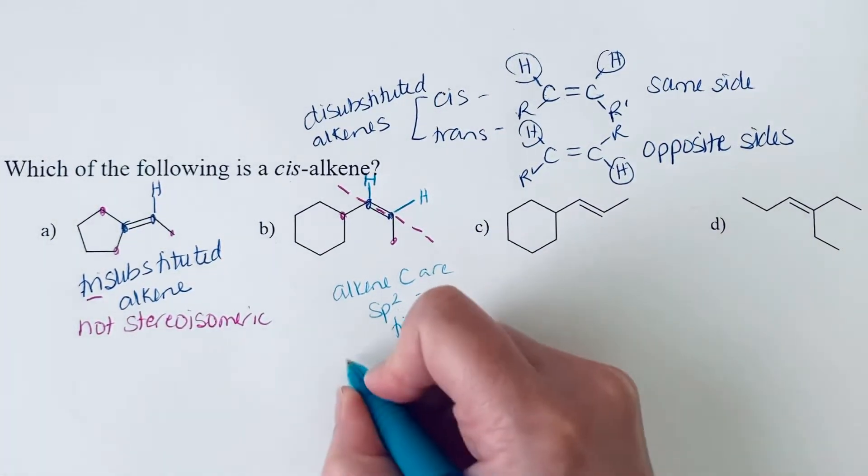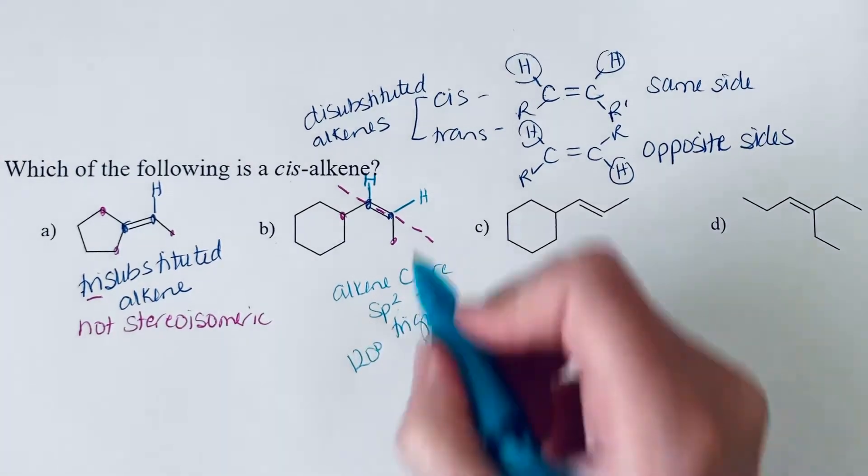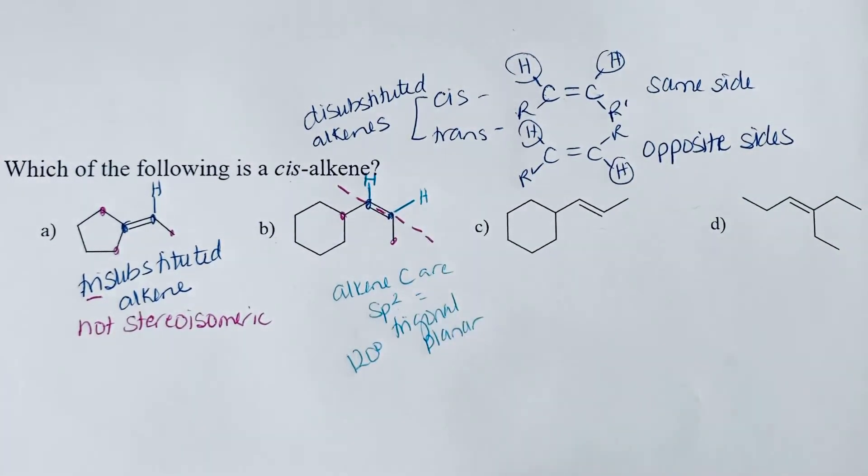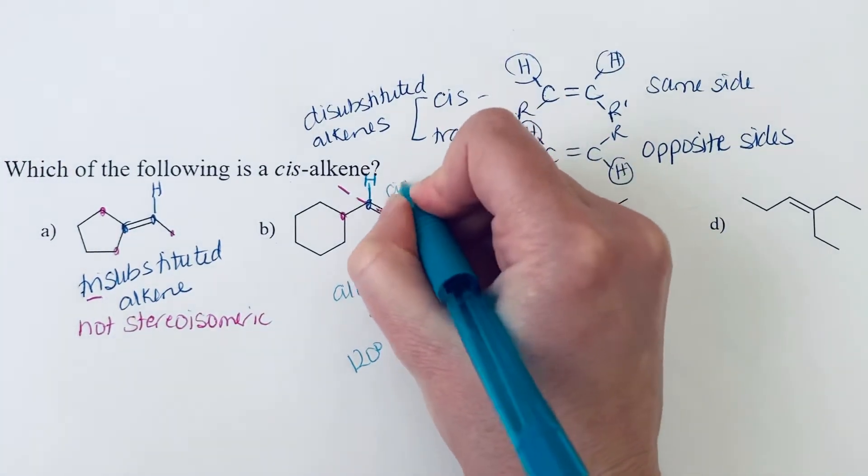So that tells me where to put this hydrogen because it's trigonal planar. I want to have those 120 degree bond angles. So that tells me exactly where to put those hydrogens. And I can see that they are on the same side.